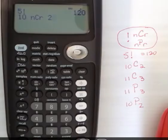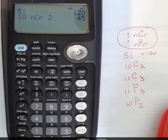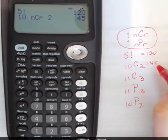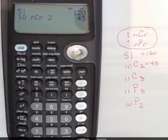So that's 10 choose 2, and I hit enter, and that gives me 45. That means there's 45 different ways that two people can win a prize when we're talking about a combination.